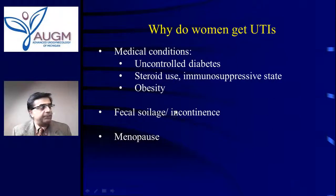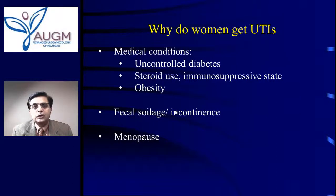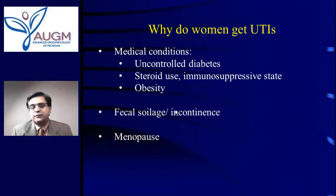Fecal soilage — also called accidental bowel leakage — is another factor. When a woman is losing stool control without realizing it, that stool soilage or constantly having stool in a pad could allow E. coli to smear forward and gain access to the vagina and then the urethra.